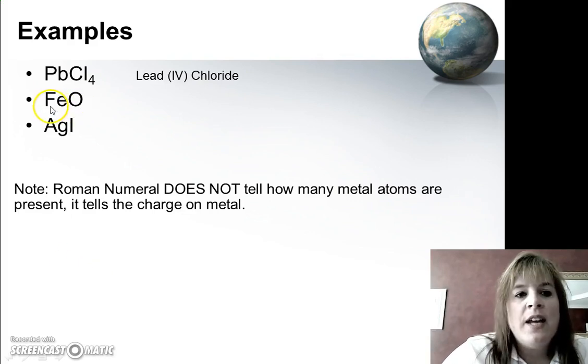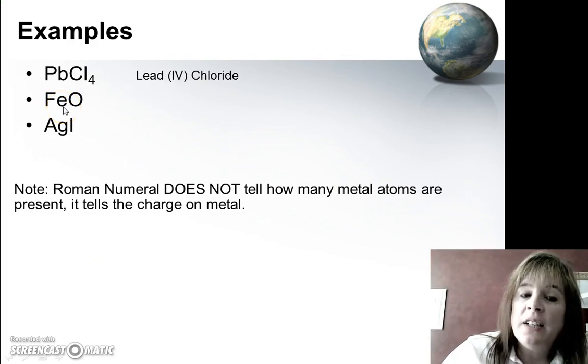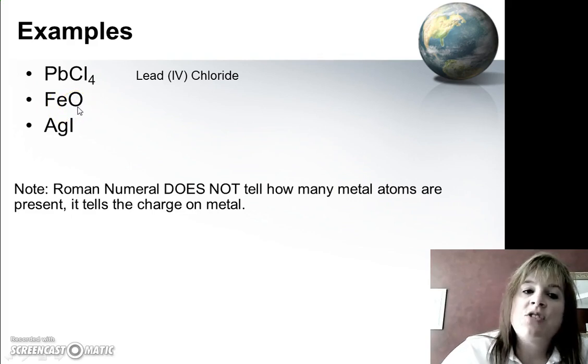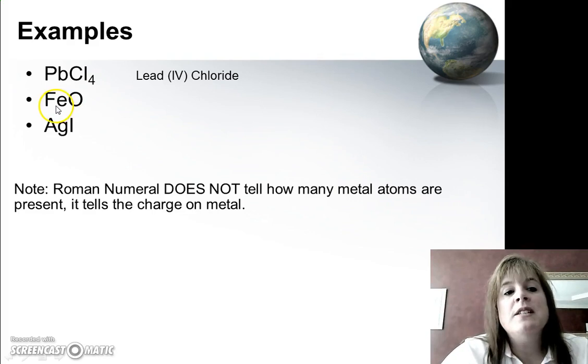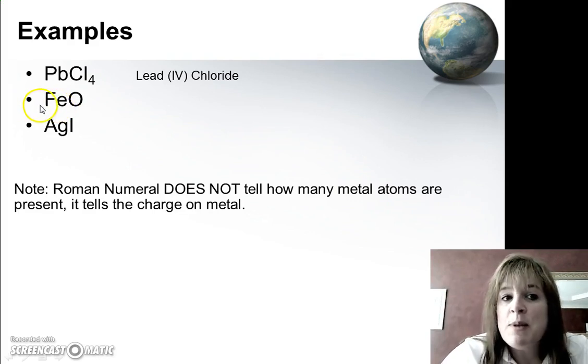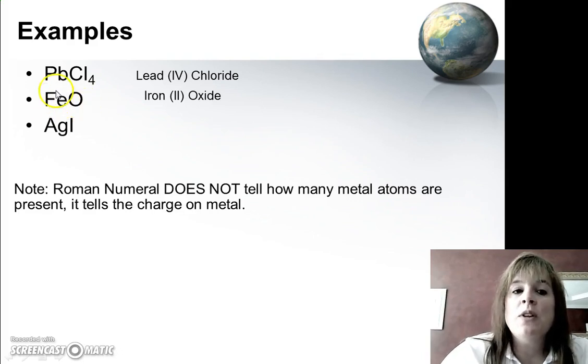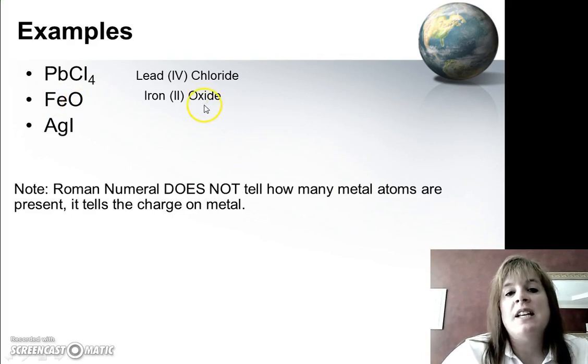Now if we look at this one, we have one atom of iron, Fe is iron, with one atom of oxygen. And on the periodic table, oxygen is minus 2, which means in order to add up to 0, this must be plus 2. So we're going to name the first one iron. We're going to put in the Roman numeral to indicate that it's plus 2. And then we name the second one, change the ending to IDE. So oxide, iron 2 oxide.